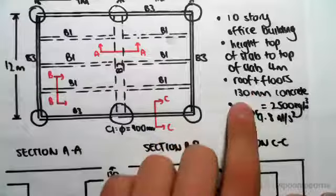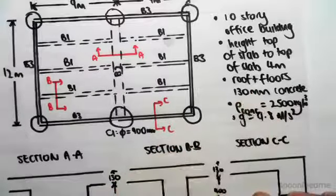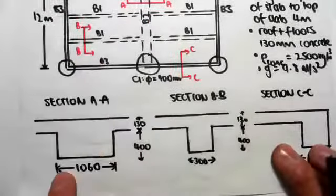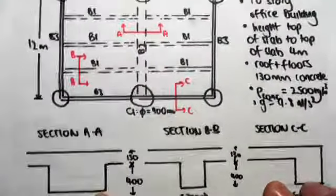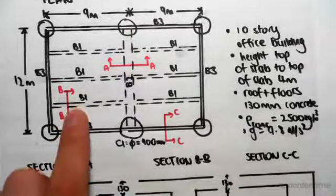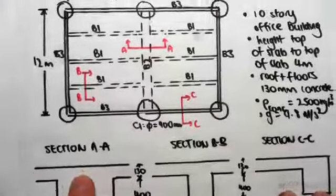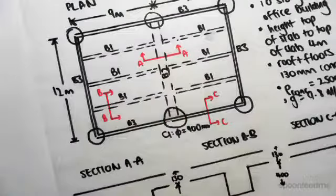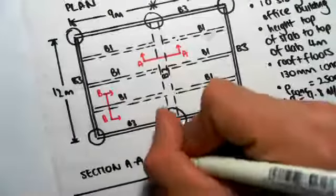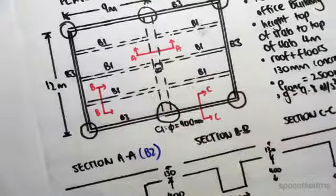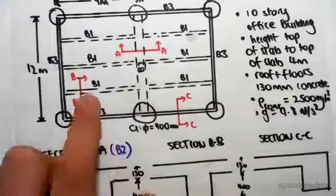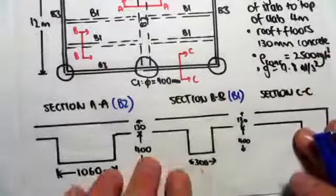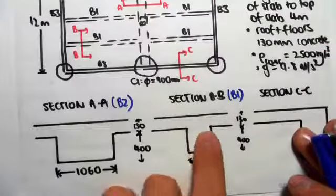For section AA, the area of our beam is 1060 by 400 millimeters. Section AA would be through the girder, the interior girder B2. Section BB is through beam one, the joist, which is 300 by 400 millimeters.